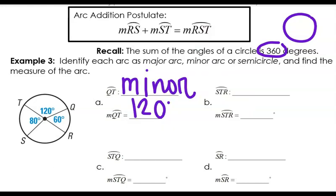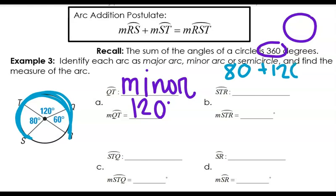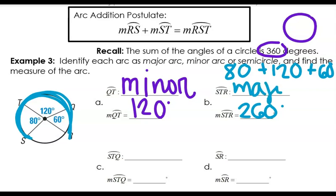Now let's look at arc S to T to R. We're adding up all of those pieces, so this is just going to be 80 plus 120 plus 60. That is 260 degrees — almost around the whole circle, just missing that one little piece. That's way more than halfway, and it's three letters — this is a major arc.